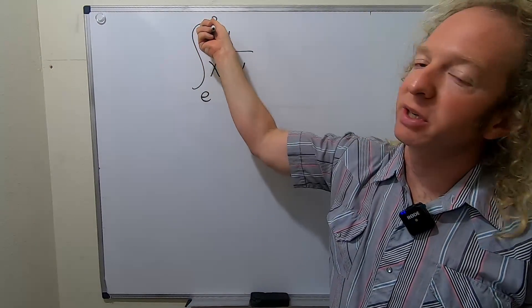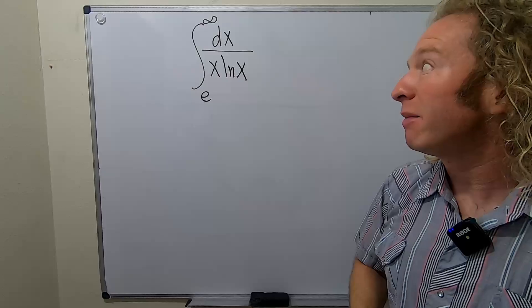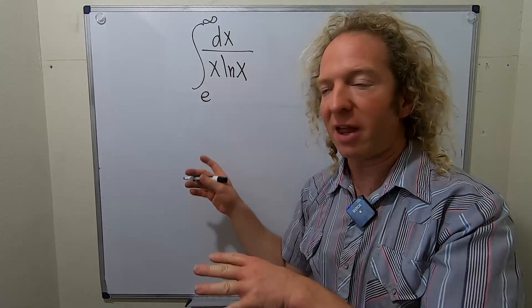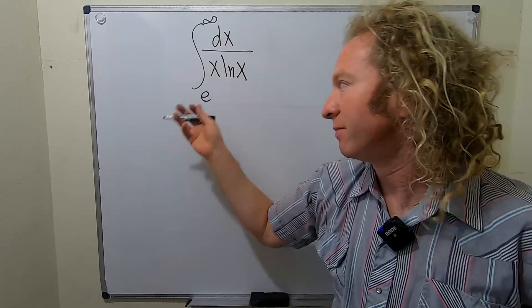So we know it's improper because of the infinity symbol. I'm thinking a good way to do this maybe would be first to work with the indefinite integral and then go back and deal with these limits. Let's do it that way.